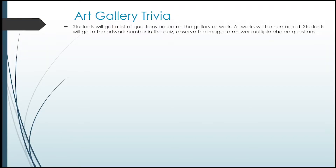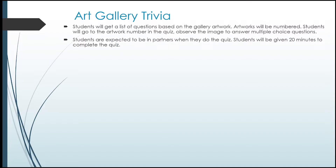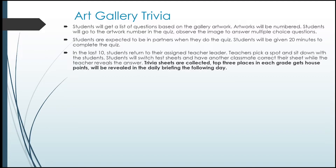For the Gallery Trivia, students will get a list of questions based on the gallery artwork. All the artworks will be numbered. Students will go to the artwork number of the quiz, observe the image, and try to answer multiple choice questions. Students are expected to be in partners — please make sure you put them into groups of two. This activity will only last 20 minutes. In the last 10 minutes, students need to return to their assigned teacher. Teachers will pick a spot and sit down with the students. Students will switch test sheets and have a partner correct their sheet while the teacher reveals the answers. The trivia sheets need to be collected, and the top three places in each grade will get house points, revealed in the daily briefing the following day.